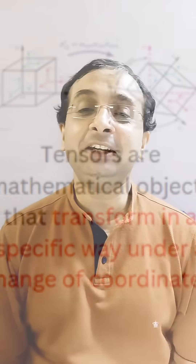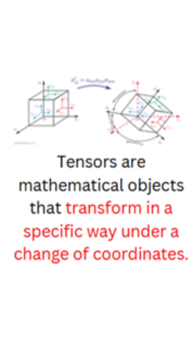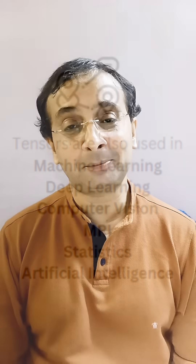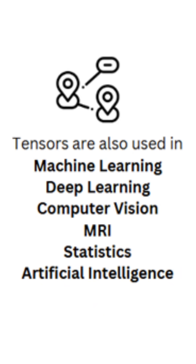Before we clear the misconceptions about tensors, I would also like to point out that tensors are not matrices only — they are something more than that. Tensors are mathematical objects which allow a lot of information to be stored in a single space, and when we transform them into different coordinate systems, they obey a set of rules.